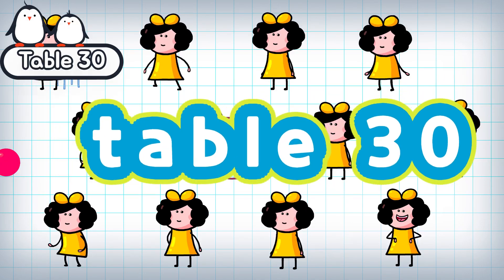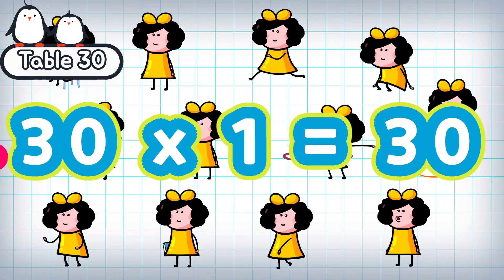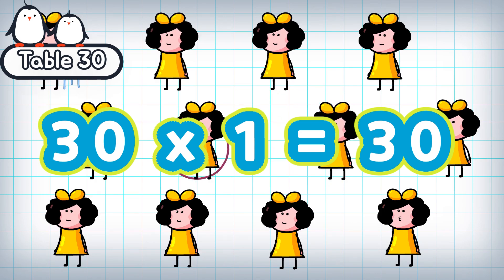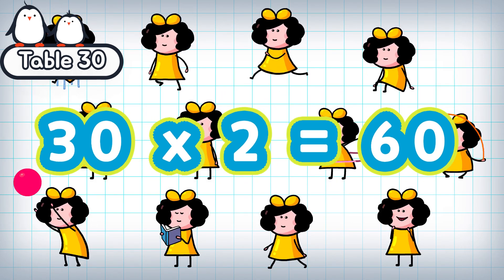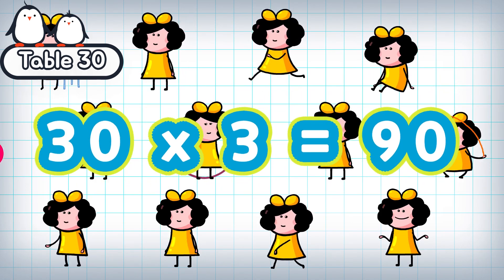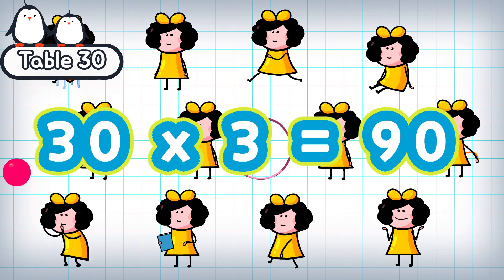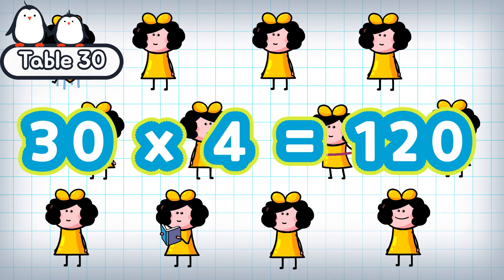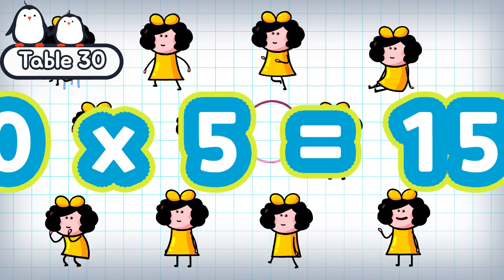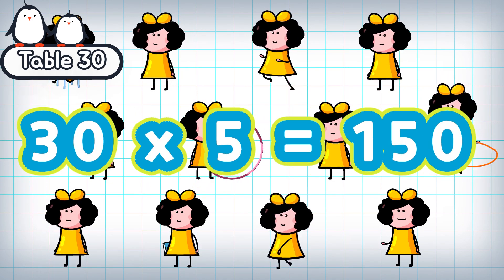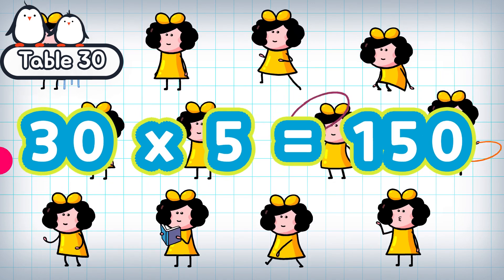Table 30. 30 times 1 is 30. 30 times 2 is 60. 30 times 3 is 90. 30 times 4 is 120. 30 times 5 is 150.